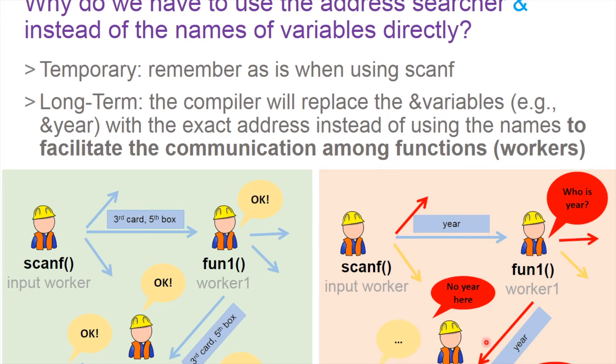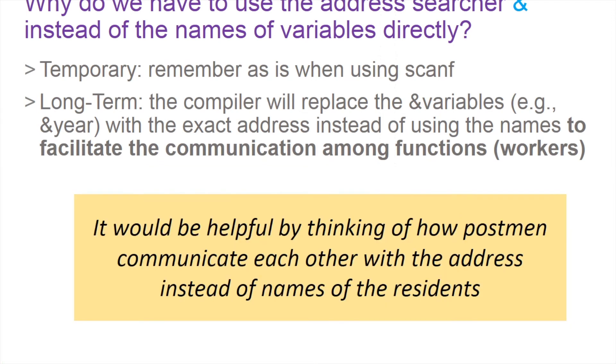However, if you're using the year name, they probably have a lot of years there. So if you're using just the name, some of the worker functions will get confused. That's the reason we sometimes have to use the address searcher rather than using the parameter names. Just remember that scanf has this preference for the address searcher. You can think of how postmen communicate with each other.